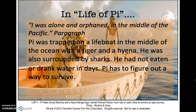In Life of Pi, Pi was alone and orphaned in the middle of the Pacific Ocean. He was trapped on a lifeboat in the middle of the ocean with a tiger and a hyena. He was also surrounded by sharks. He had not eaten or drank water in days, because Pi has to figure out a way to survive — like me of course.